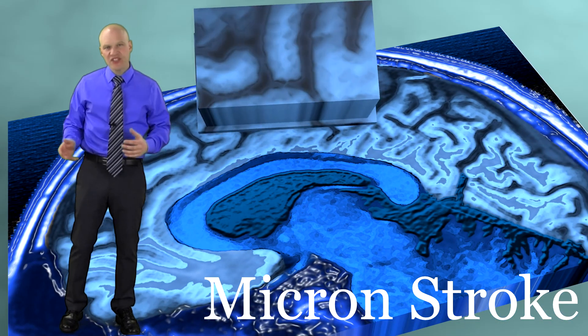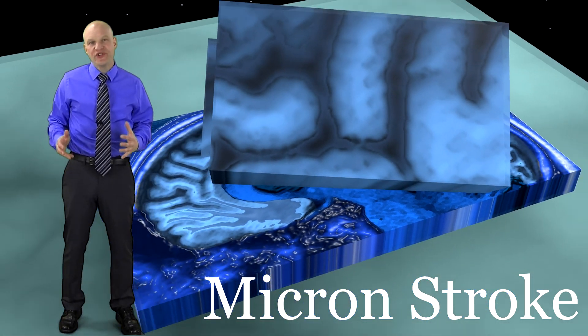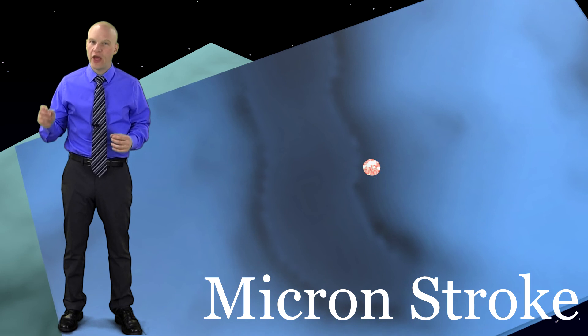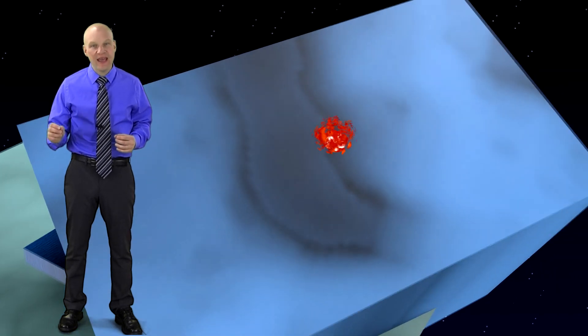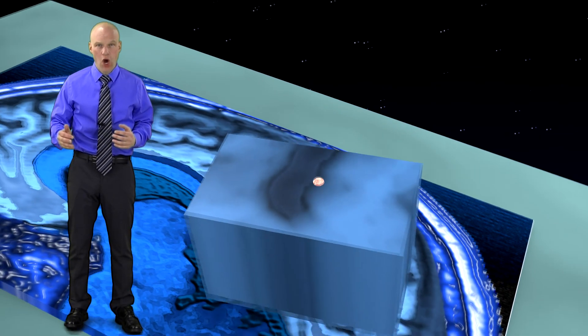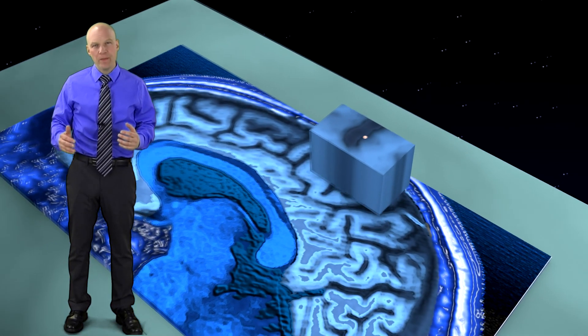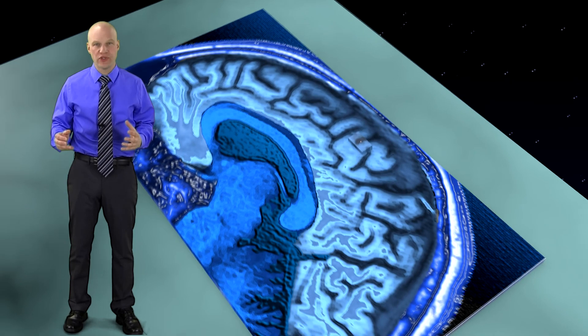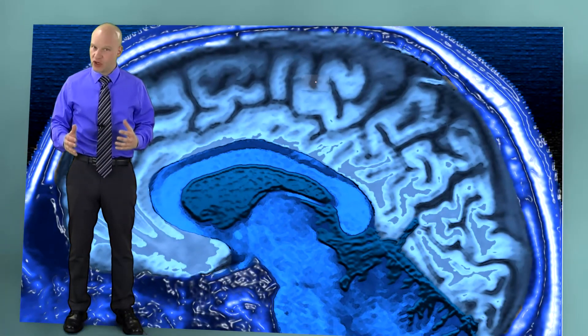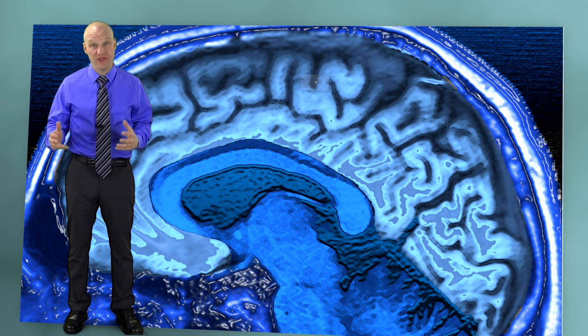Micron stroke. This is my concept, and what you can see here is that the damage to the brain is so small that you never knew it happened, and an imaging study of the brain will not show it. It will not be picked up in the single, or in the tens, or maybe even the hundreds. But as you start to approach thousands or many thousands of micron strokes, the damage to the brain is going to be very easy to be picked up.